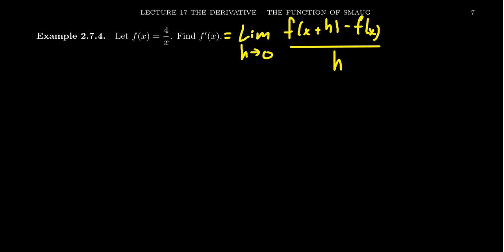So we want to compute this, for which we can't just plug in h equals 0 because we'll end up with 0 over 0, which is indeterminate form. So we're going to have to try to simplify the difference quotient algebraically.